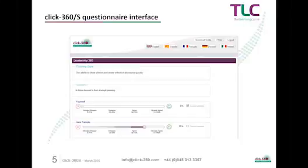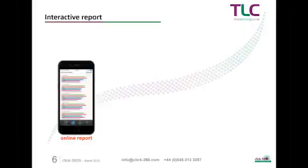Let's take a little bit more of a look at this digital report. This comes standard in the Clip360S tool. Imagine that your 360 feedback has now been completed by all your raters, the data is in, and your report is ready. You've been sent a link to your report by email, and here it is accessed via your smartphone. For clarity, let's transfer now to a tablet view.